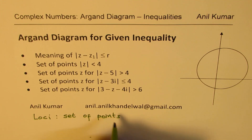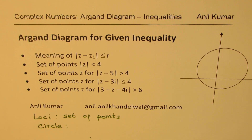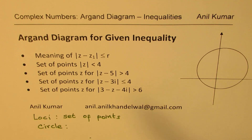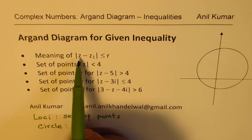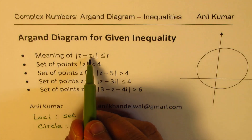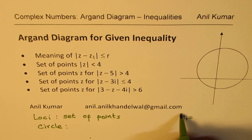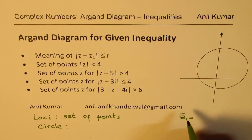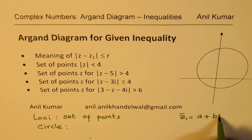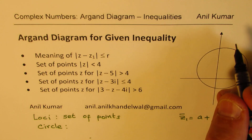In all these examples, we are actually sketching a circle. Let me review what we learned earlier. When I say absolute value of z minus z1 is less than or equal to r, it means z1 is our specific vector. So let's call z1 as a plus bi — we are talking about complex numbers in general. So this could be represented on our Argand diagram.